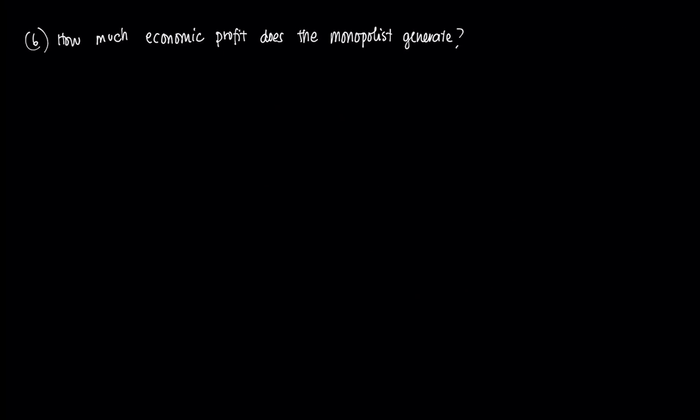Let's move on to our next question: how much economic profit does the monopolist generate? This is essentially producer surplus, another welfare indicator. By definition, the profit of a monopolist equals revenue minus cost, which is pm times qm minus the cost function C(qm).